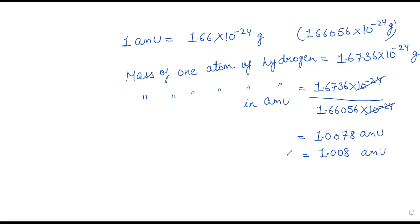इस तरीके से आप लोग देखते हो कि gram और atomic mass unit का correlation बनाया गया है। उसके बाद हमारे पास next चीज़ है — average atomic mass.